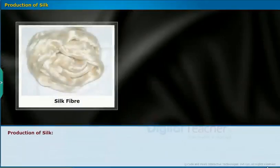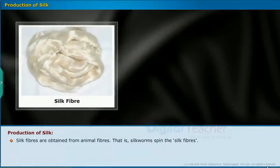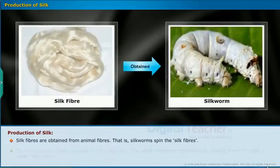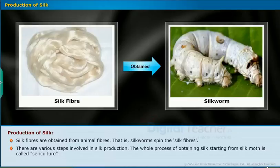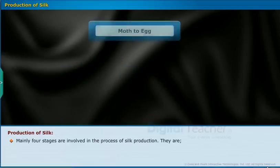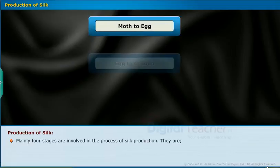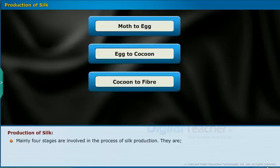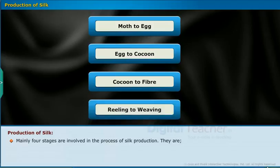Silk fibers are obtained from silkworms that spin the silk fibers. The whole process of obtaining silk starting from the silk moth is called sericulture. Mainly four stages are involved in silk production: moth to egg, egg to cocoon, cocoon to fiber, and reeling to weaving.